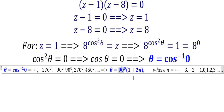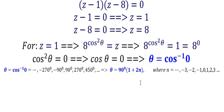So this means 90 degrees and 270 degrees and all their co-terminals, where n is any integer from negative infinity to infinity. That is the first solution.